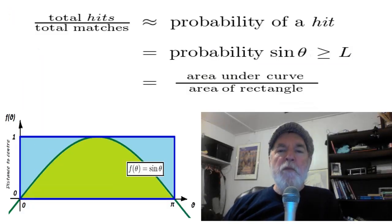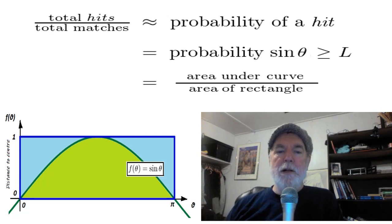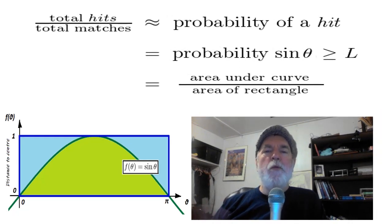The proportion of possible hits to all possible match positions is the ratio of the area under the sine curve to the area of the whole rectangle. With a lot of matches, the proportion is going to be pretty close to the probability of a hit. Now the rectangle's area is pi.